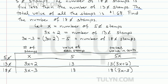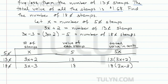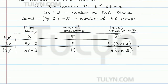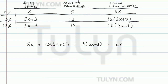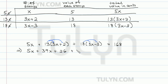So now let's go back to the problem. It says the total value of all the stamps is $1.68, and remember $1.68 is 168 cents. So what we can say is the total value of 5 cent stamps plus the total value of 13 cent stamps plus the total value of 18 cent stamps has to equal 168 cents. Since this is a linear equation, let's distribute the 13 and the 18 into their appropriate sums.